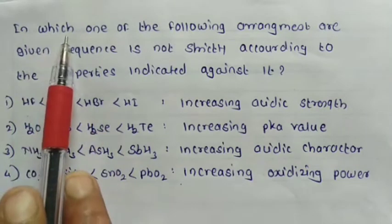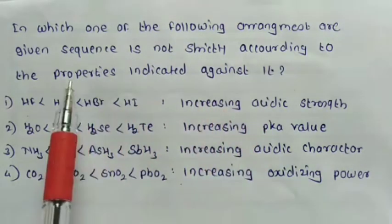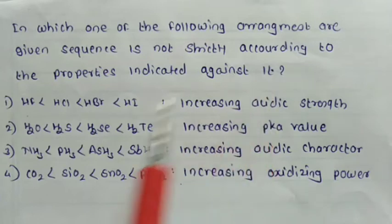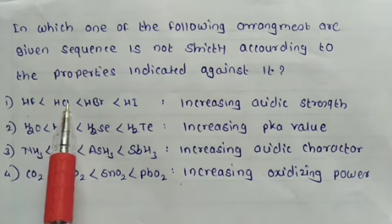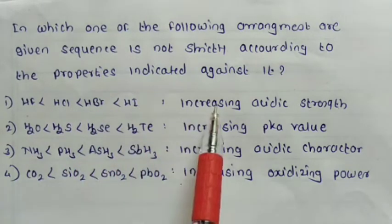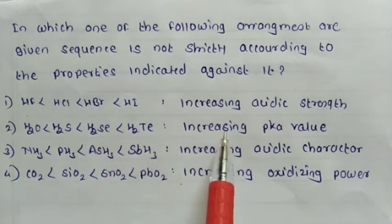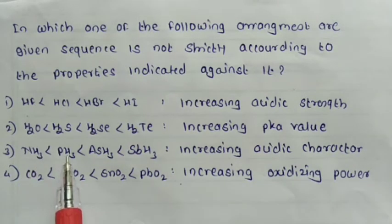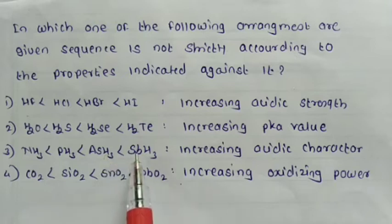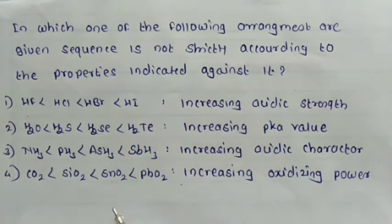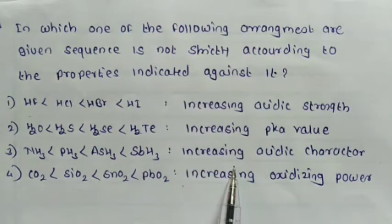See the next question: which one of the following arrangements is not strictly according to the property indicated? We need to find the incorrect sequence. Option 1: HF < HCl < HBr < HI — increasing acidic strength. Option 2: H₂O < H₂S < H₂Se < H₂Te — increasing pKa value. Option 3: NH₃ < PH₃ < AsH₃ < SbH₃ — increasing acidic character. Option 4: CO₂ < SiO₂ < SnO₂ < PbO₂ — increasing oxidizing power. Out of these four sequences, we need to find the one that is incorrect.